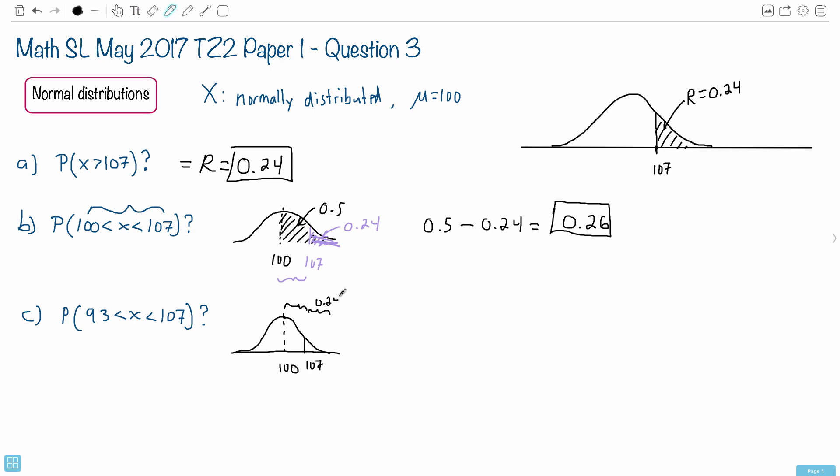We know this is 0.24. We know that this over here is 0.26. That's what we know from here to here, that's 0.26.